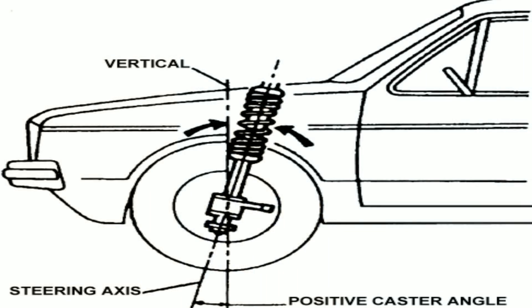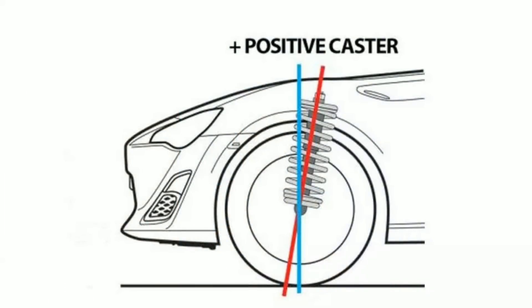What we call the caster angle is a very important angle. The caster angle is a side angle — the angle between the side view and the steering axis. A positive caster angle gives straight-line stability. The important thing is how we use the steering angle — this is positive caster.